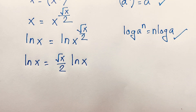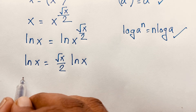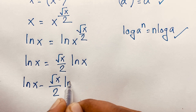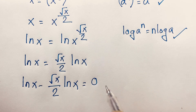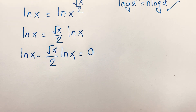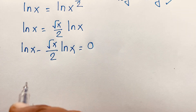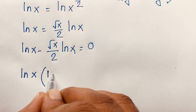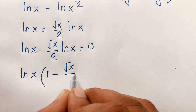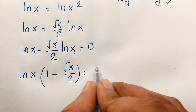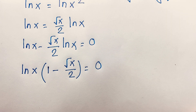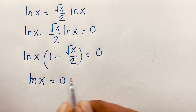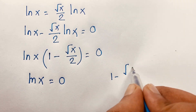Now this expression rearranges to: ln x minus square root x over 2 times ln x equals 0. You can see that ln x is common, so I factor it out. It will be ln x times (1 minus square root x over 2) equals 0. So we find two cases: our first case is ln x equals 0, and the other case is 1 minus square root x over 2 equals 0.